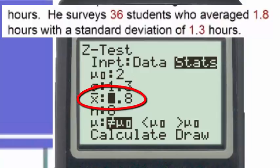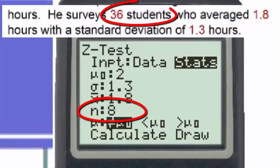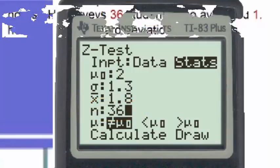X-bar is the sample mean, and here the average of the 36 students was 1.8. And finally, the number of students contained in the sample is 36.